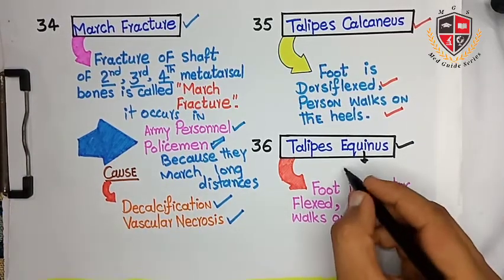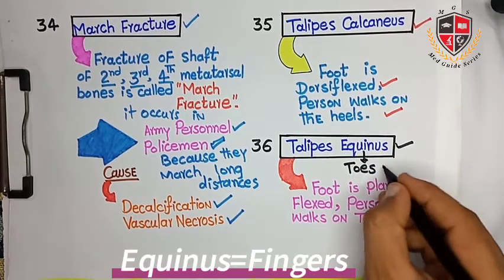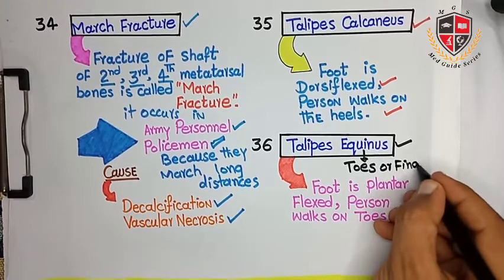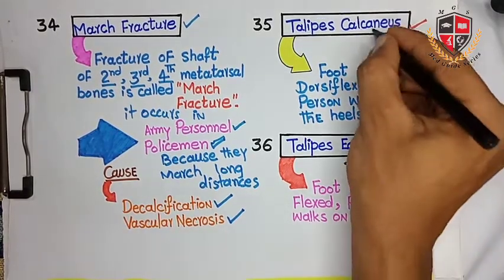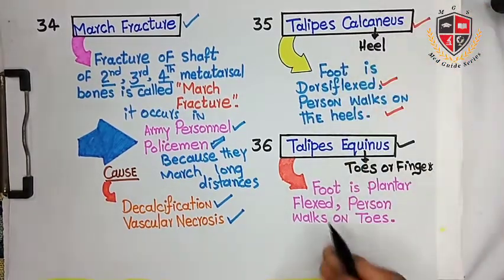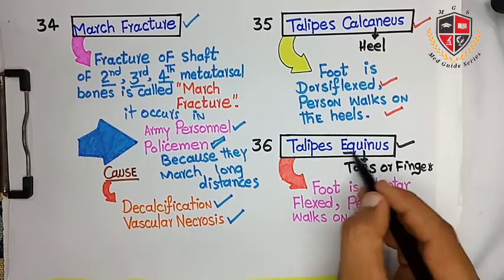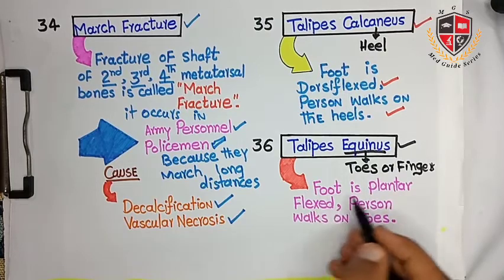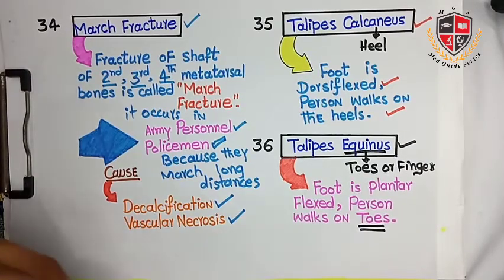The next clinical is talipes equinus. Equinus means toes or forefoot. During talipes equinus the forefoot is plantar flexed and the person walks on toes, so equinus is associated with the toes.